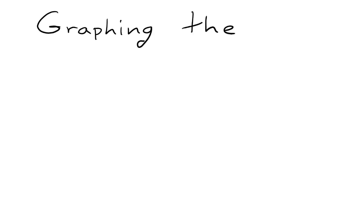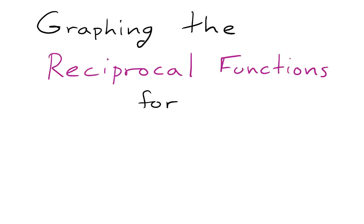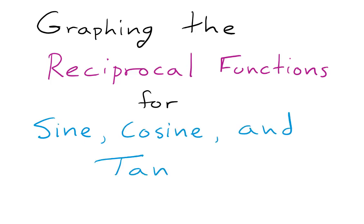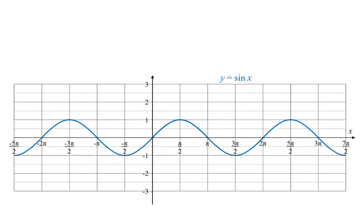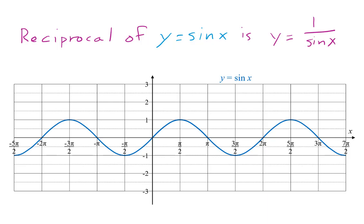In this video, we graph the reciprocal functions for sine, cosine, and tangent. First, we look at the function y equals sine of x. The reciprocal function is y equals 1 over the sine of x. To graph it, we select points on the graph of the sine function, keep the same x value, and find the reciprocal of the y value.